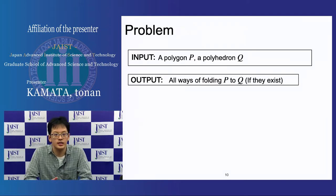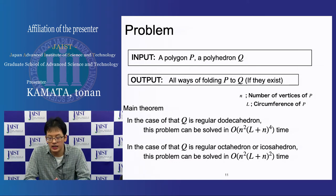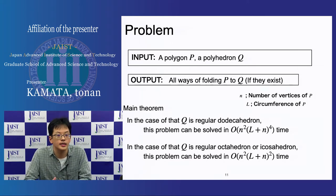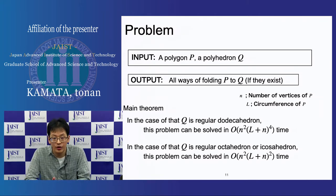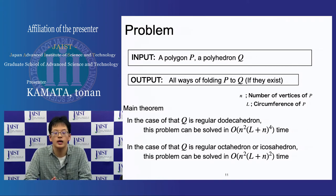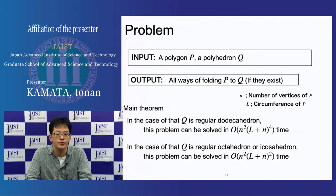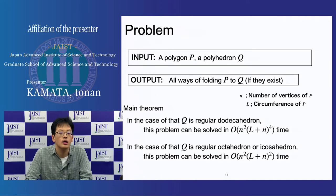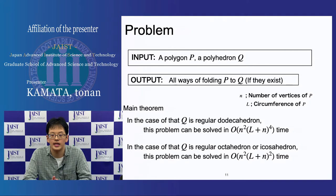The problem is defined as follows. I show this problem can be solved efficiently in two cases. In the case where the polyhedron is a regular dodecahedron, computational time is O(n² · L + n²⁴). In the case where the polyhedron is a regular octahedron or icosahedron, computational time is O(n² · L + n²).